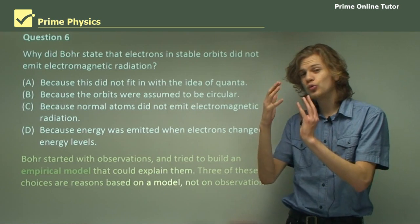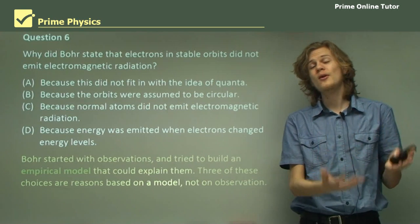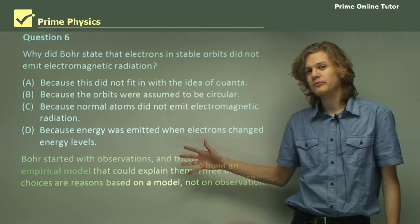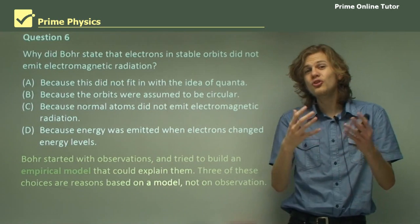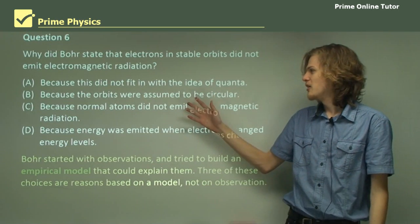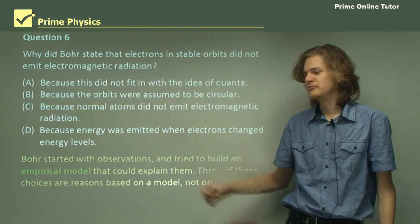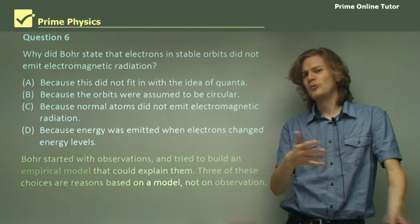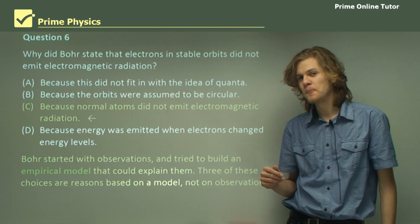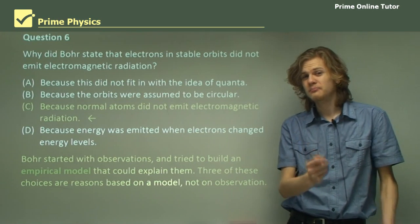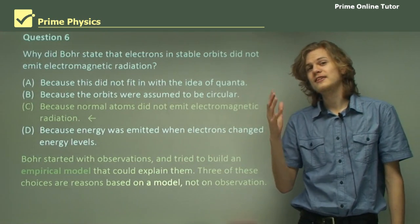So Bohr started with observations, not assumptions. And he built an empirical model. An empirical model is a model that describes something about the world without having a good understanding of exactly what's happening. Without having a good theoretical understanding. So it was able to successfully explain the spectral lines of hydrogen. But Bohr didn't know why. So we can't say it didn't fit in with the idea of quanta. Because he was using quanta to try and explain this effect. We can't say it's because the orbits were assumed to be circular. Because we're not assuming anything. We're trying to just explain the spectral lines. We can't say it because energy was emitted when electrons changed energy levels. Because that's a consequence of the model and not a reason for it. In fact, the only correct answer here is C. Normal atoms do not emit electromagnetic radiation. Bohr noticed, of course, that atoms don't do that. And so he assumed that, for some reason, didn't know why, the electrons were not emitting any electromagnetic radiation.